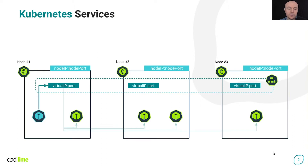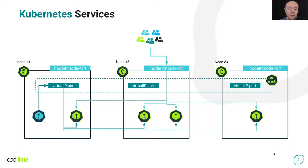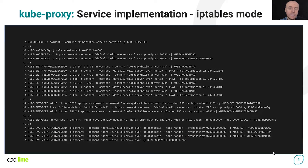Specifically for the cluster IP service, kube-proxy performs load balancing for internal communication between different workloads running in the cluster. For the node port and load balancer services, load balancing is also provided for external connections. Let's look at an example extract from a real node port service configuration made by kube-proxy. Kube-proxy is configured to work in IP tables mode. For this purpose, it creates custom chains within the IP tables system.